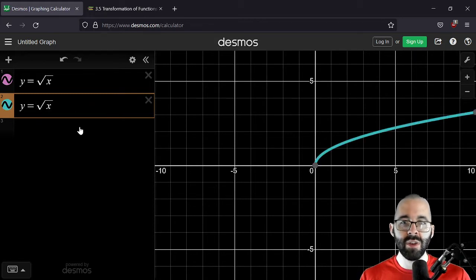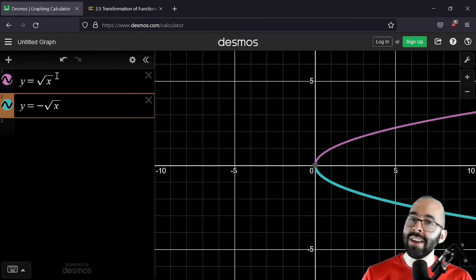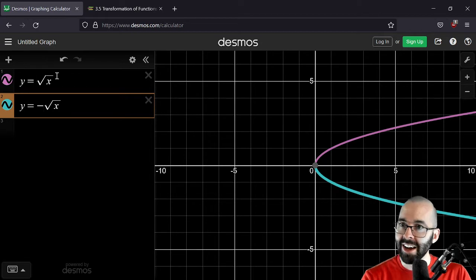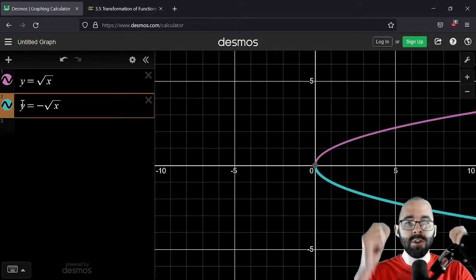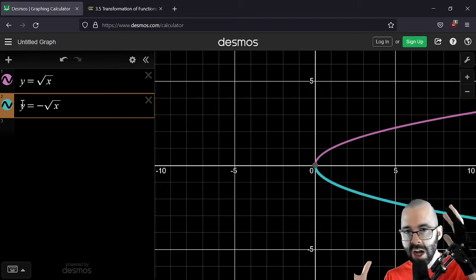How do we turn all the positive y values into negative y values? We add a negative in the front. A negative on the outside of the function is a vertical change. Outside of the function, vertical change.